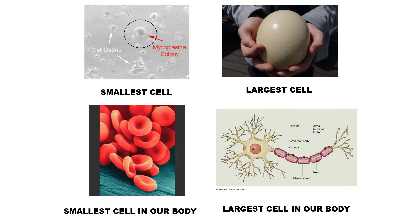You can see all those in this diagram. The smallest cell is PPLO — pleuro-pneumonia-like organism, also called mycoplasma. The largest cell is the ostrich egg. The longest cell is the neuron, the nerve cell. The smallest cell in our body is the RBC, the red blood cell.